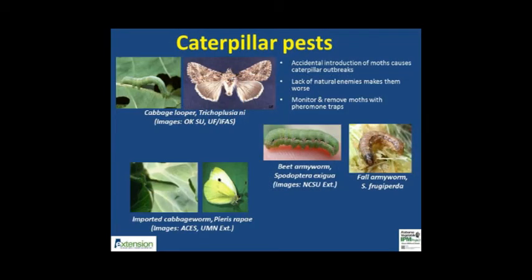There are many caterpillar pests of greenhouse vegetable crops that start out with moths accidentally entering through open doors or unscreened vents. Each moth can lay several hundred eggs that may have a high probability of surviving inside greenhouses due to favorable temperatures and a lack of natural enemies. Most moths are dull looking and are only active at night, whereas butterflies such as the imported cabbage worm are day-flying colorful insects. Armyworms and loopers can be monitored using sticky wing pheromone traps.